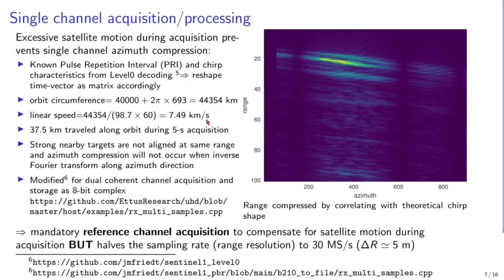Over the five seconds of the record, the satellite travels 37 kilometers. The strong target, instead of remaining at a fixed range, migrates from index 20 to about index 25. This means azimuth compression — a Fourier transform along the azimuth direction — will not converge because all pulses are at different ranges. Therefore, dual-channel recording is needed to compensate for satellite motion during the acquisition.